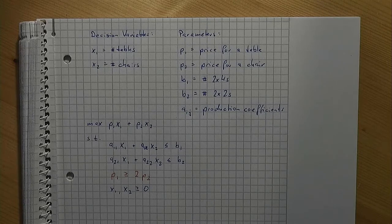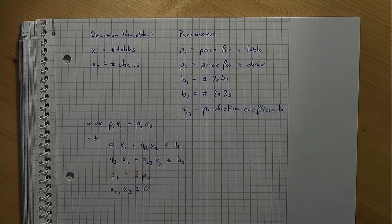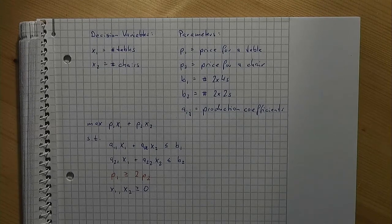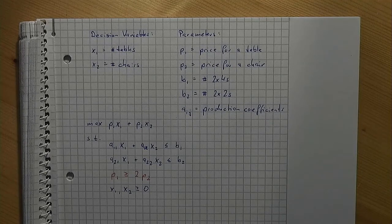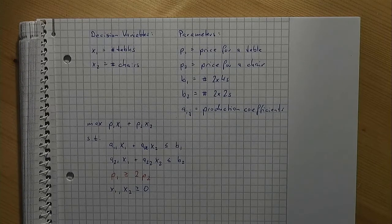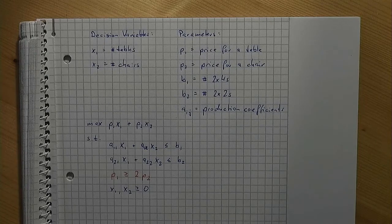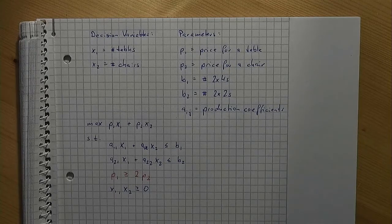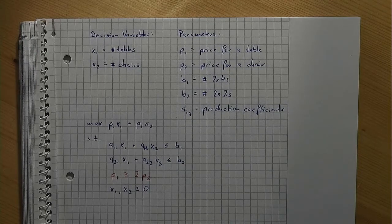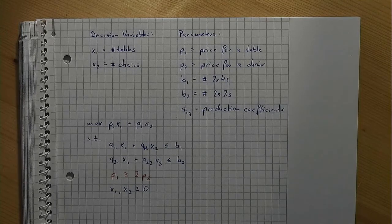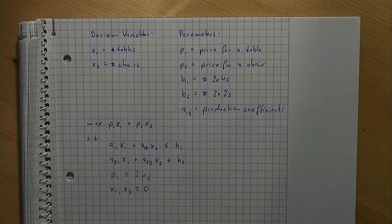The constraint just added contains no decision variables. Recall that p1 and p2 are parameters. Their value is assumed to be given. So whatever values you choose for the decision variables x1 and x2, the new constraint is always true or it is always false. And therefore it makes no sense to have this constraint in the model.